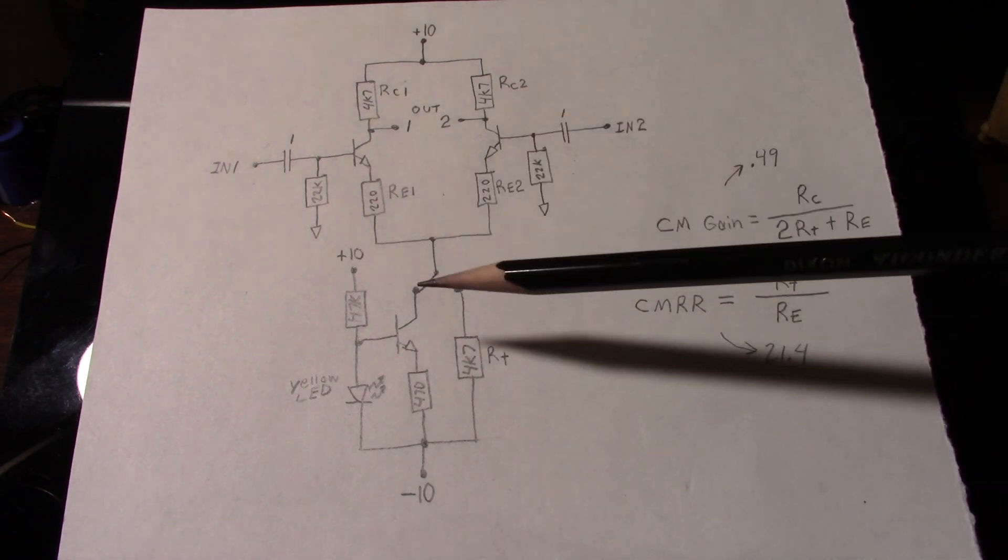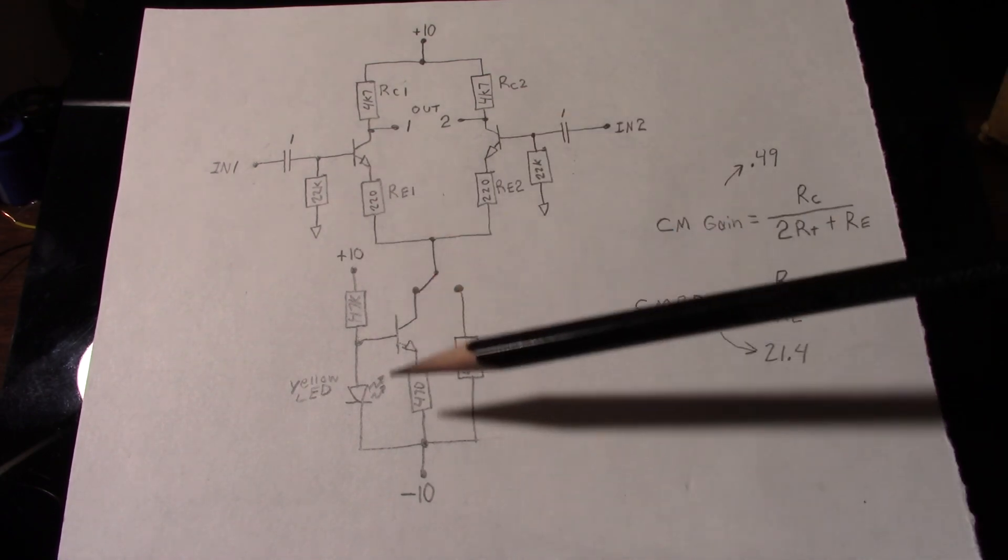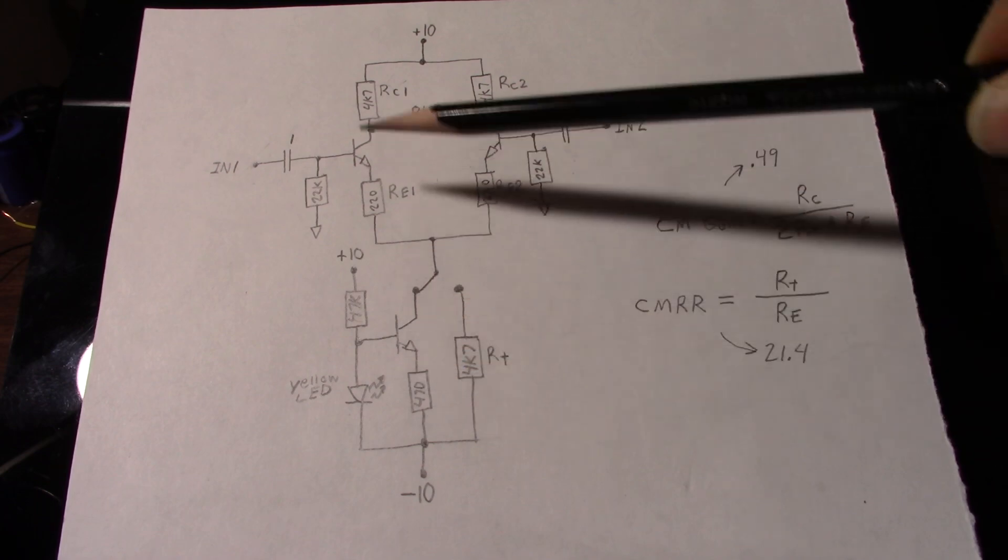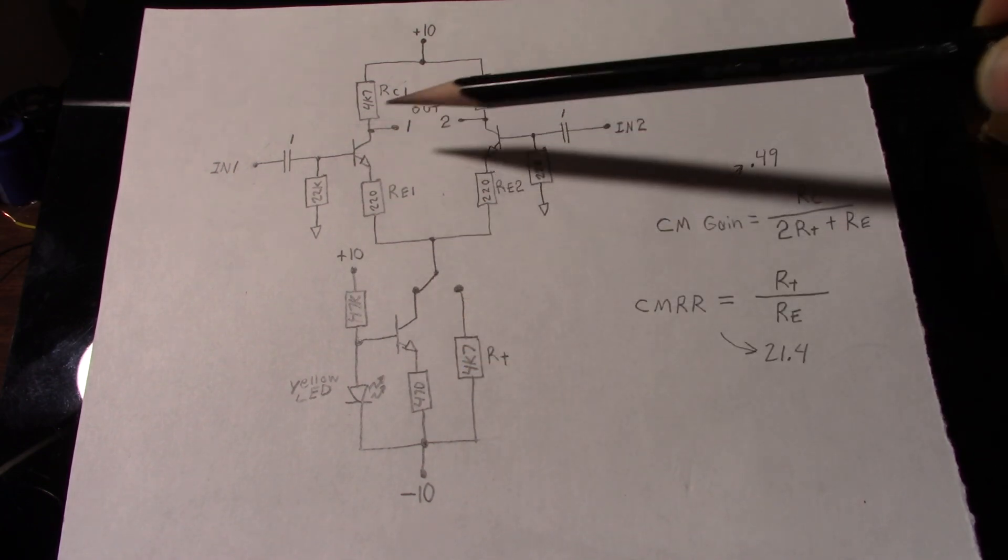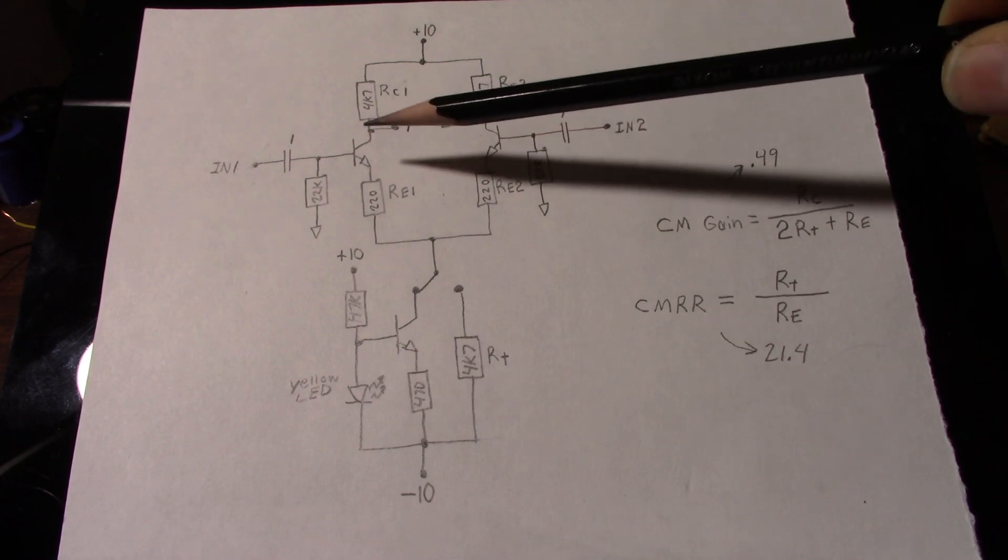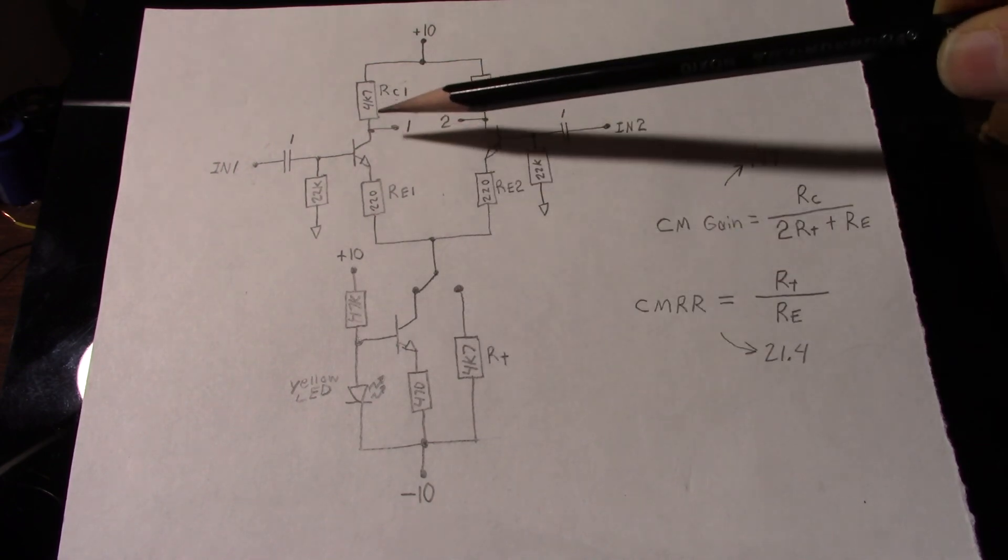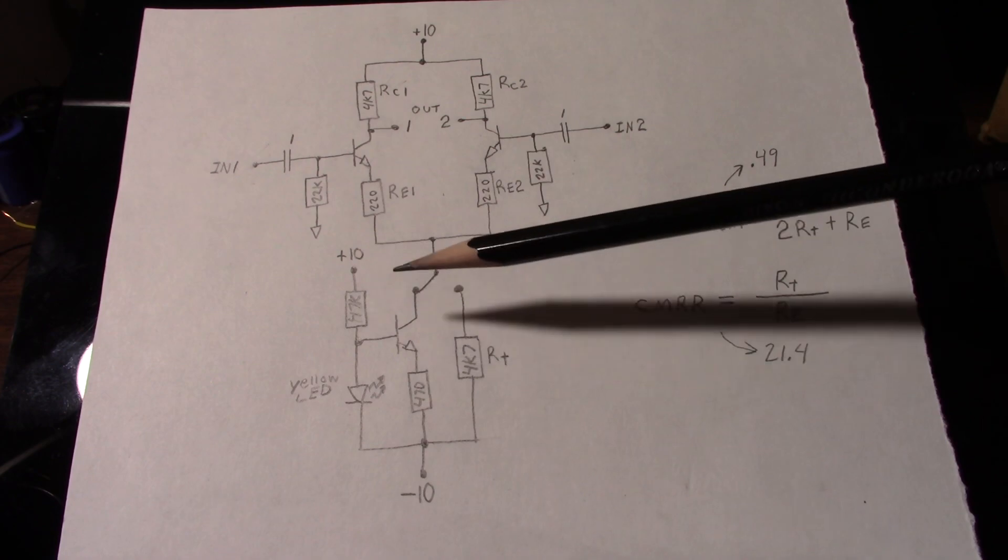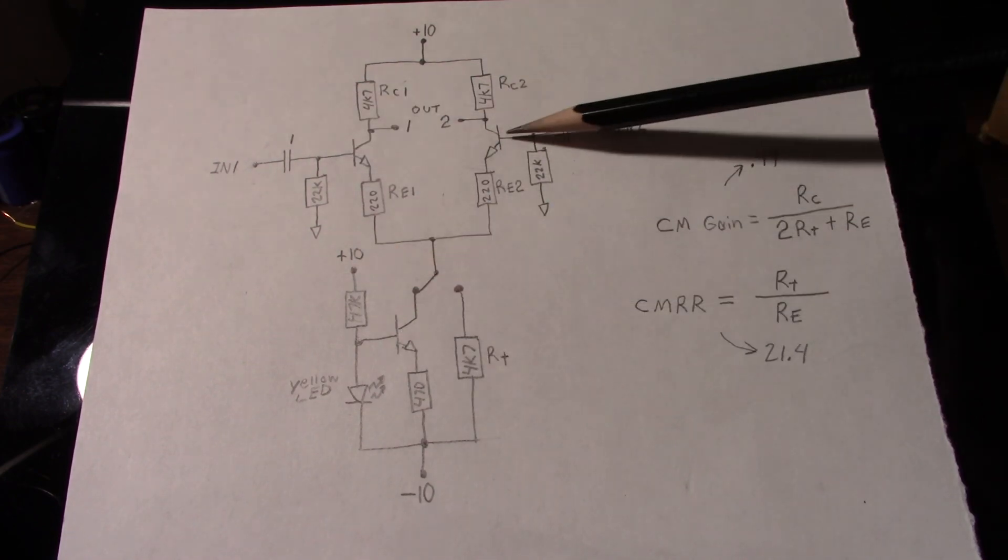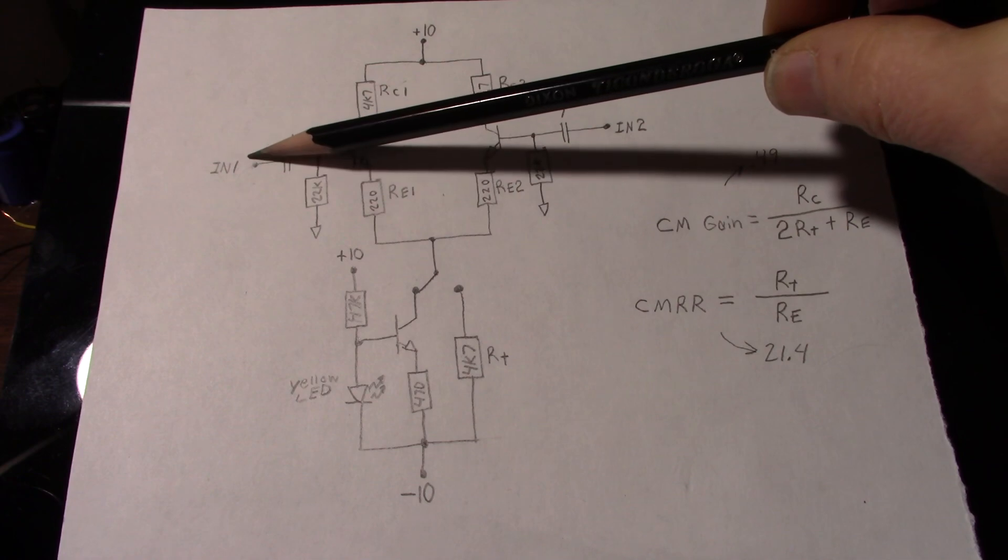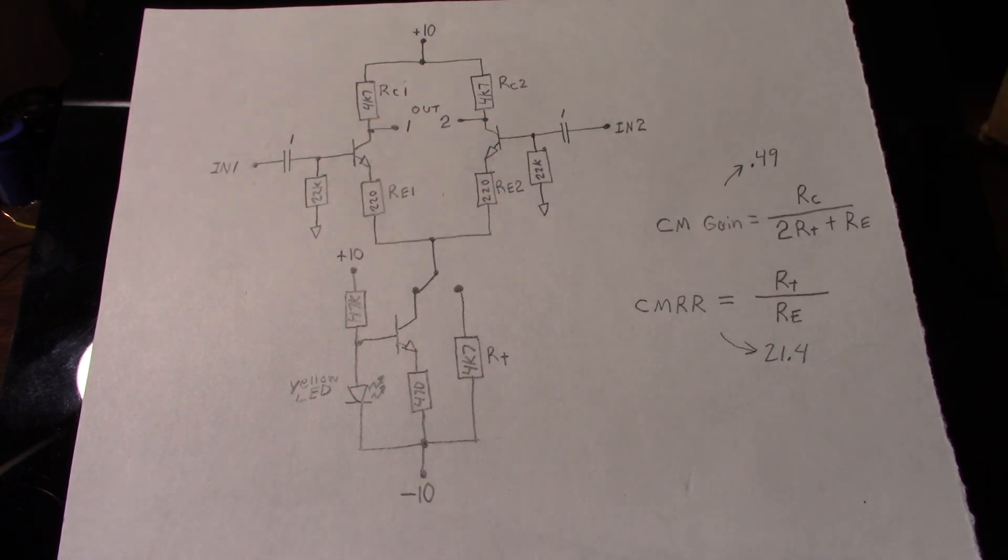So what I want to do is take this side of the circuit out. But I'll have to do one more thing. Because the constant current source is programmed to handle two sides, I have to reprogram it for half the current because there's only one side in there. So I'll do that, reprogram it, take this side out, and I'll put the signal in and we'll see what happens here.